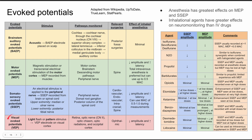Visual evoked potentials are the last one on this table. These usually start with a light flash or a pattern stimulus into the eye, eventually going to the visual evoked potential electrode on the visual cortex. The pathway monitored is the retina, the optic nerve — cranial nerve 2 — the optic chiasm, optic radiations, and occipital cortex. These are relevant in ophthalmic surgeries, and the inhaled anesthetics have a similar effect of decreased amplitude and increased latency, though less of an effect than on the motor and somatosensory evoked potentials.